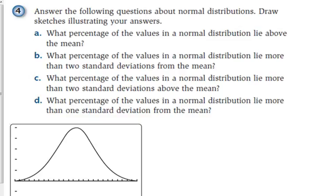Question 4, part A says: what percentage of the values in a normal distribution lie above the mean? Think about that for a second. What percent of the values in a normal distribution lie above the mean? So the mean is supposed to be where? In the middle. So what percent are above that?